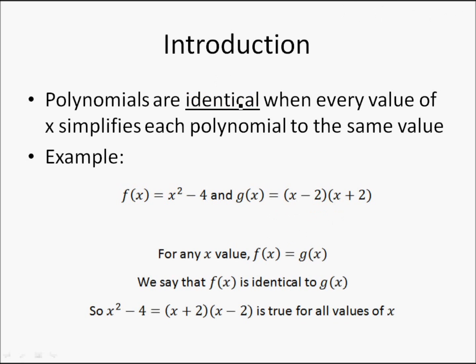To summarize, for any x value, if f(x) = g(x), then we can say that f(x) is identical to g(x), and the reverse is true. Since x² - 4 = (x + 2)(x - 2), we can say that f(x) and g(x) are identical, and therefore, for any x value, f(x) = g(x).